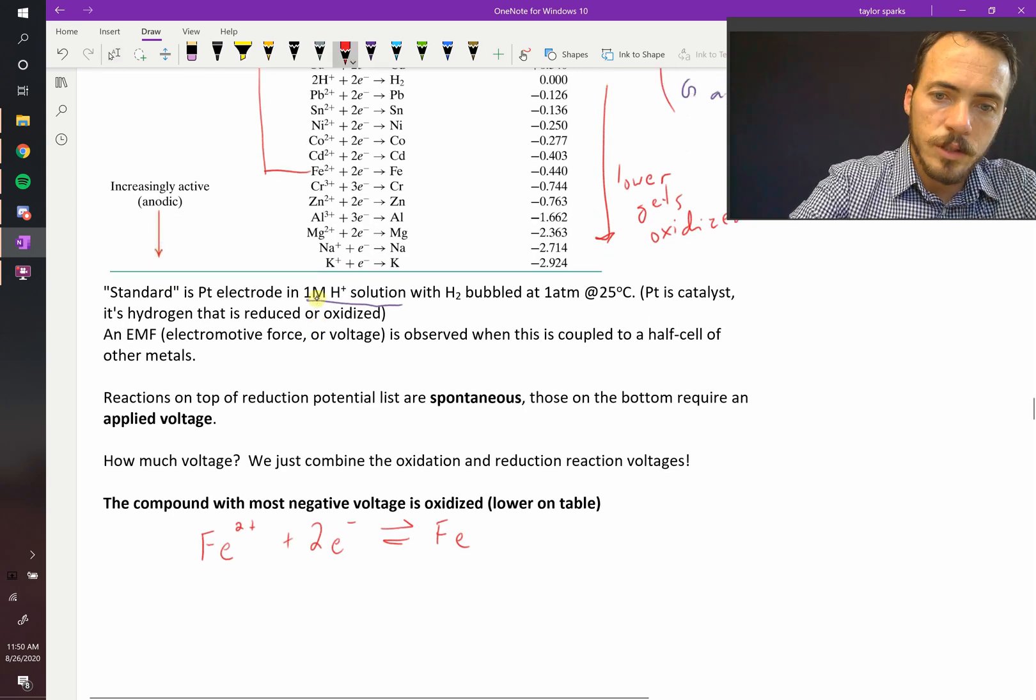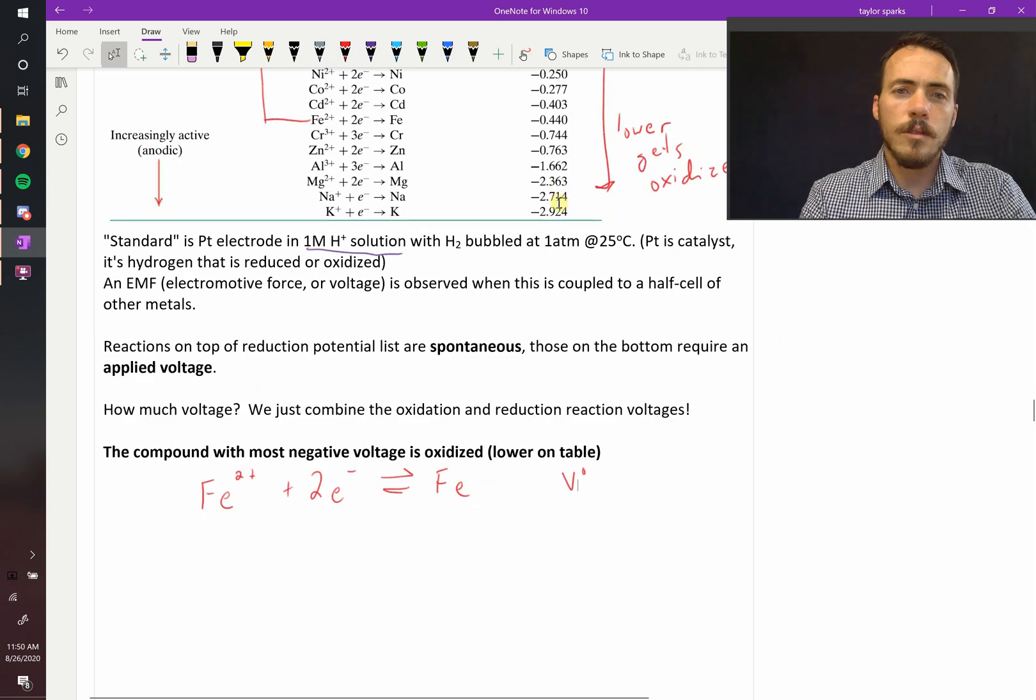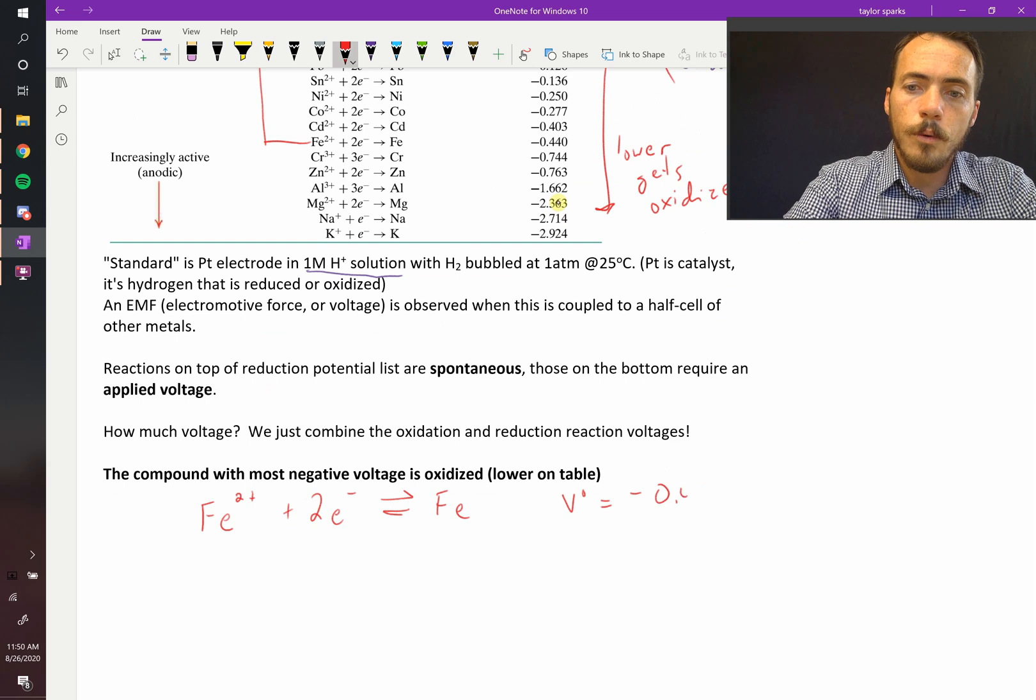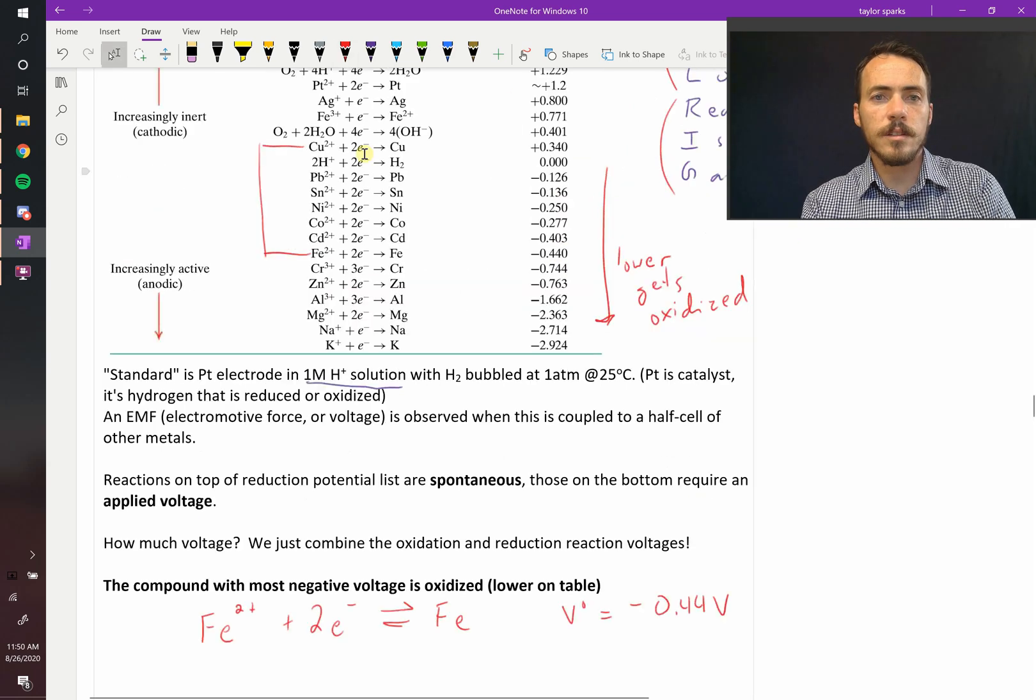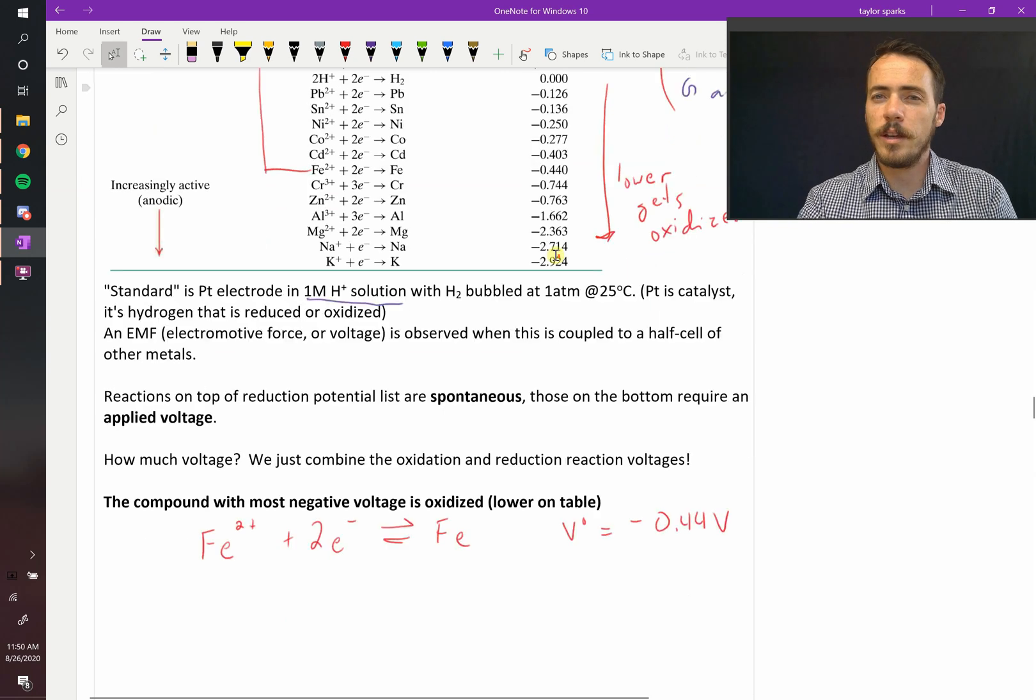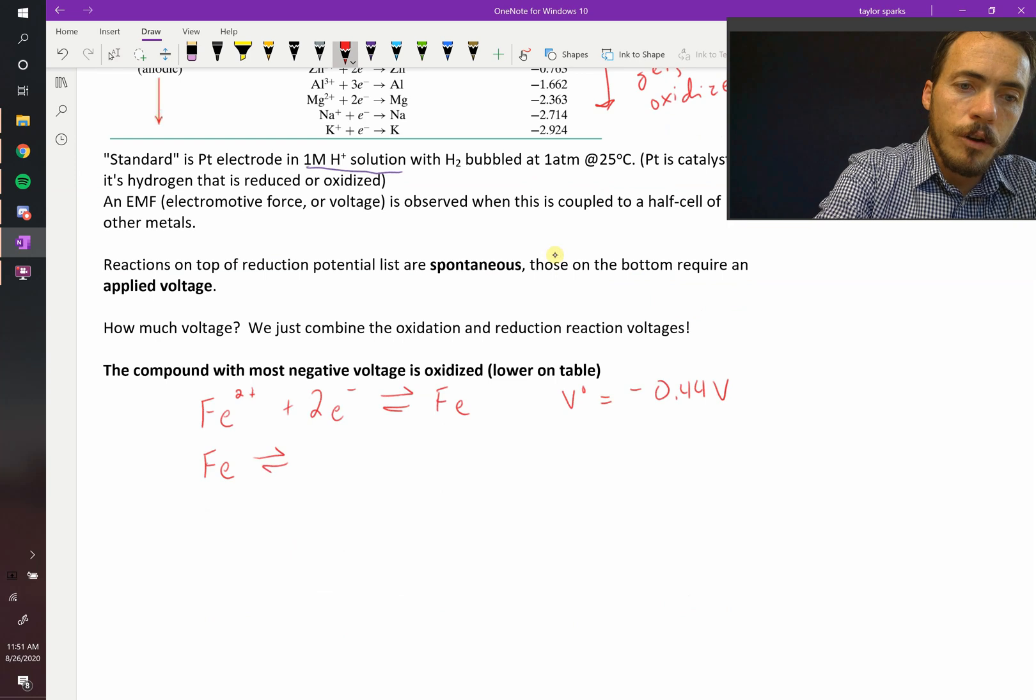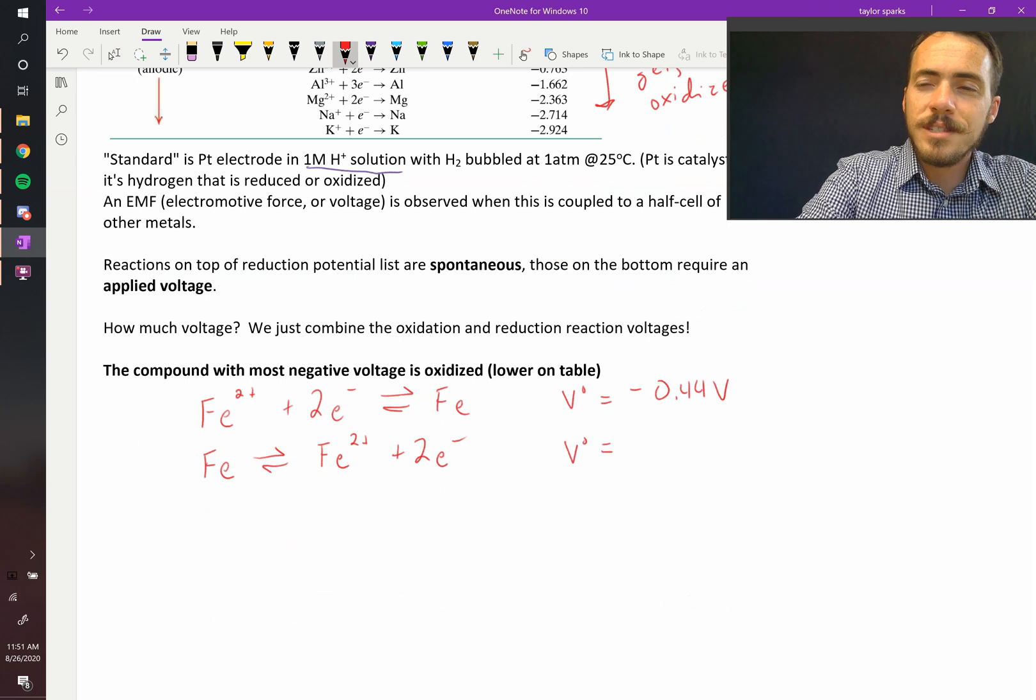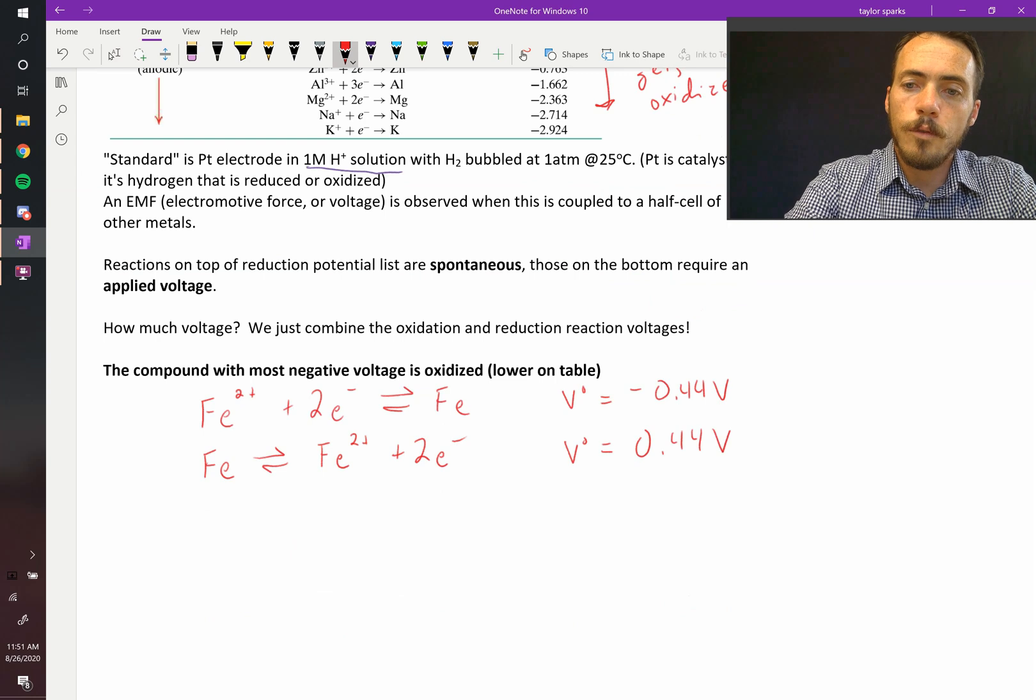So in this case, iron and copper. Iron two plus picks up two electrons to become iron metal. But because that's the lower one, that happens first off right now at a voltage of, we call that a V naught. That's our standard electrode potential. So the V naught, the voltage for that half cell reaction right now is negative 0.44 volts. But we said because it's lower than copper, this one's going to get flipped and written as an oxidation. So we can say, all right, let's flip it. Now it's going to be iron metal dissolving to form iron two plus ions and giving up two electrons. When we flip the reaction, we flip the sign of the electrode potential. It now becomes positive 0.44 volts instead of negative.